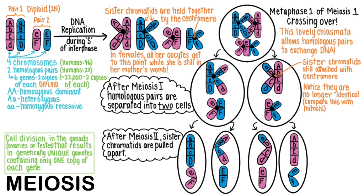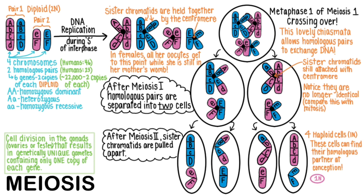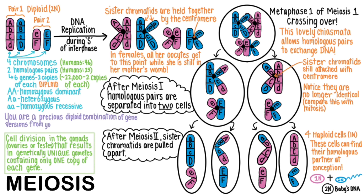You end up with four haploid cells — one N. Haploid means each gamete only has one copy of the gene. These cells can find their homologous partner at conception: one egg is fertilized by one sperm and a 2N baby's genomic DNA is produced. Indeed, you are a precious diploid combination of gene versions from your mother's egg and your father's sperm.